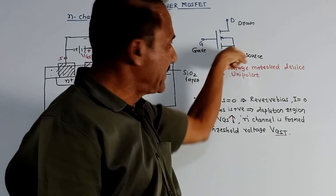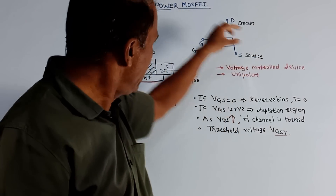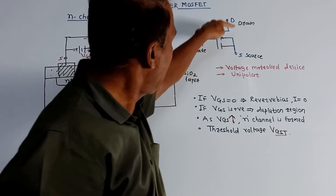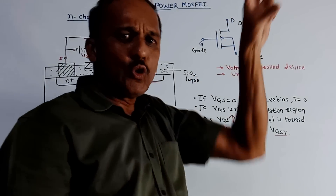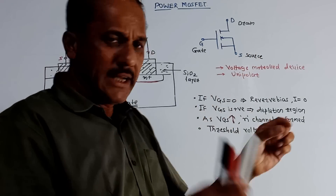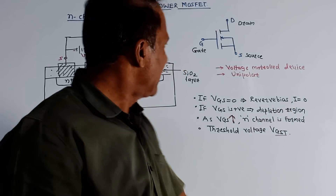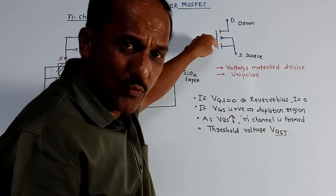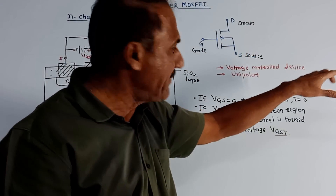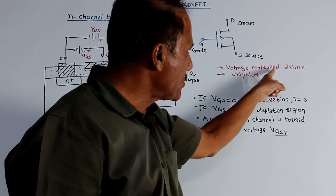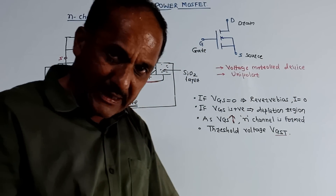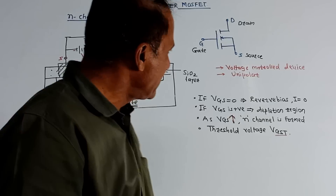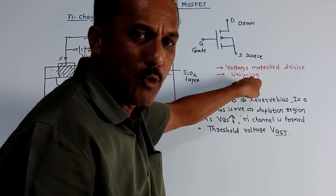First we'll discuss the symbol of this device. It has three major terminals: Gate Terminal G, Source Terminal S, and Drain Terminal D. Two important parameters are: first, it is a voltage control device — by applying voltage between gate and source, we can control the conduction. Second, the flow of current is due to majority charges, so it is also called a unipolar device.